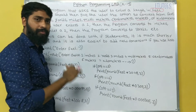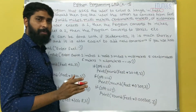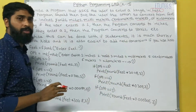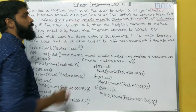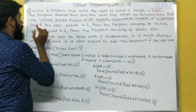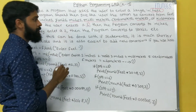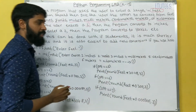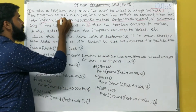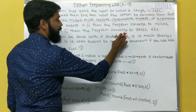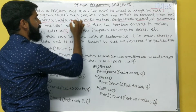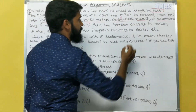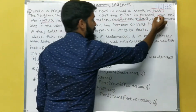That means you enter the feet, and then the user can select an option. Based on the user's choice, you are going to convert the feet into one of these options. If the user enters 1, it converts to inches. If they enter 2, it converts to yards. If 3, miles. If 4, millimeters. If 5, centimeters. If 6, meters. If 7, kilometers.